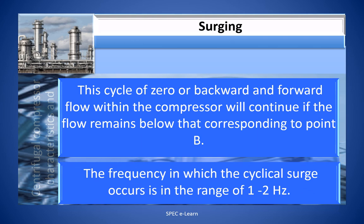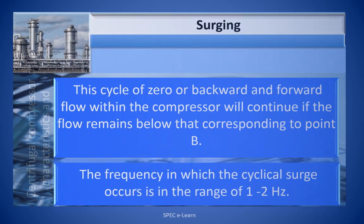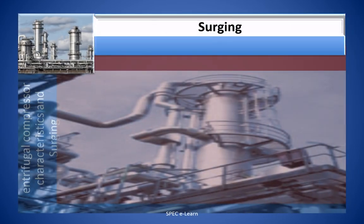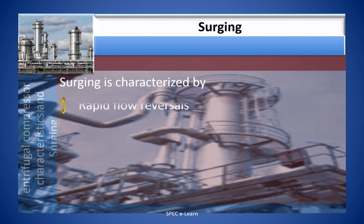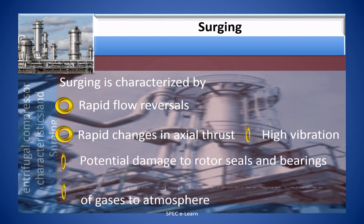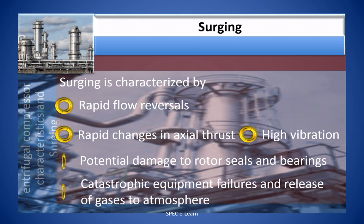This cycle of zero or backward and forward flow within the compressor will continue if the flow remains below that corresponding to point B. The frequency at which the cyclical surge occurs is in the range of 1 to 2 Hz. Surging is characterized by rapid flow reversals, rapid changes in the axial thrust, high vibration, potential damage to rotor seals and bearings, catastrophic equipment failures, and release of gases to atmosphere.